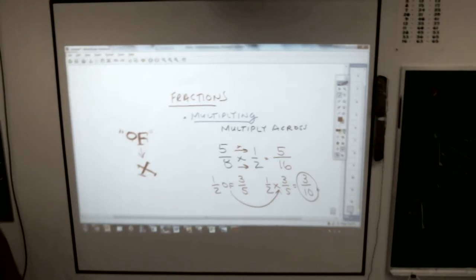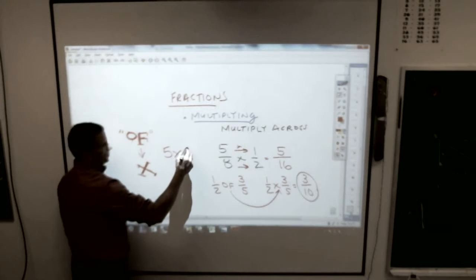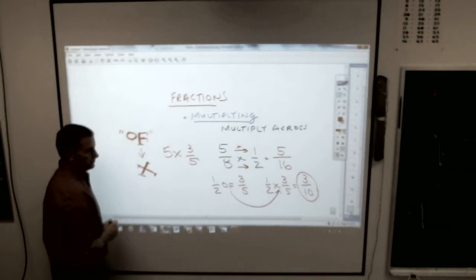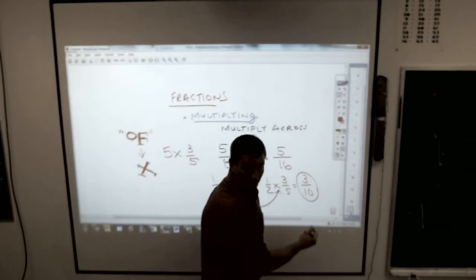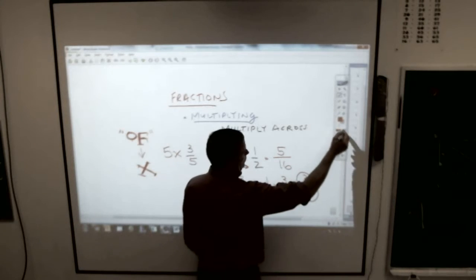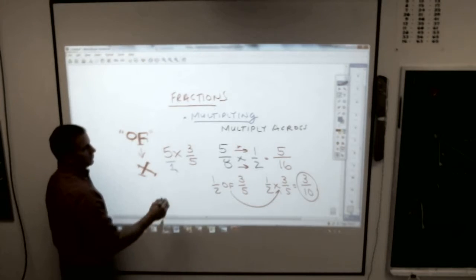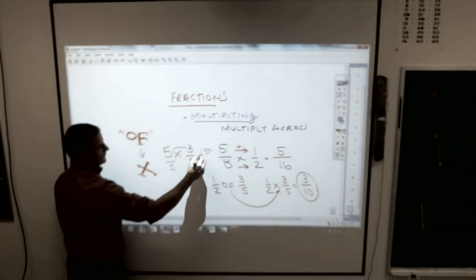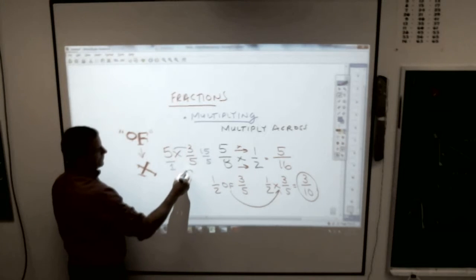What about if you have a whole number times a fraction? What if it was five times three-fifths? Chase? You make a fraction by putting a one on it. And then when you multiply across, five times three is fifteen, and five times one is five, which, of course, turns to three.